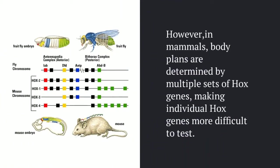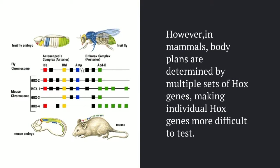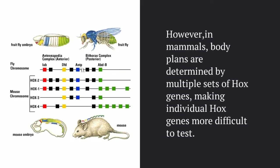These types of experiments were a little more difficult for testing on mammals rather than insects, because mammals have multiple sets of Hox genes that can compensate when one of the Hox genes has been deactivated, unlike in insects where they only have one set. So the phenotypic results in insects are obvious because there is no other gene to cover it up. In mammals, it was not as easy to narrow down the specific function of certain Hox genes.